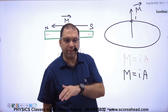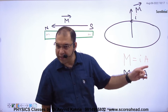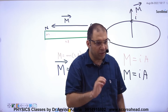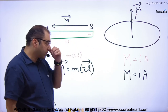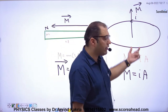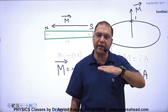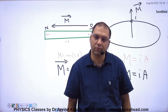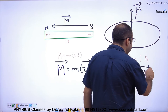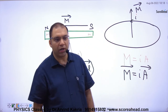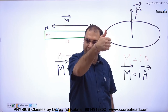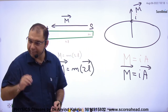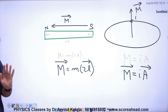So the point is clear: for a bar magnet, M is from south to north. For a current-carrying loop, use the right-hand rule — four fingers with current, thumb gives capital M direction. Similarly, the area vector is perpendicular to the plane of the loop, and its direction is also given by the right-hand rule: curl four fingers with current and the thumb gives the area vector direction. These two concepts — bar magnet and current-carrying loop — are different.